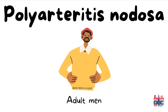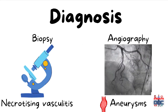Polyarteritis nodosa is usually common in adult men. The diagnosis can be confirmed by doing a biopsy in the affected area, where you can see necrotizing vasculitis. And by doing angiography, we can see the presence of aneurysms in various blood vessels.